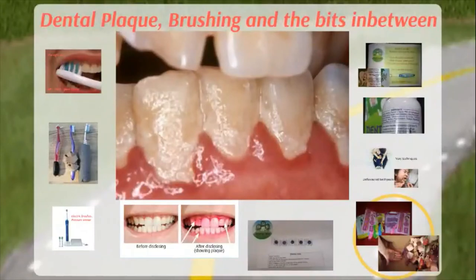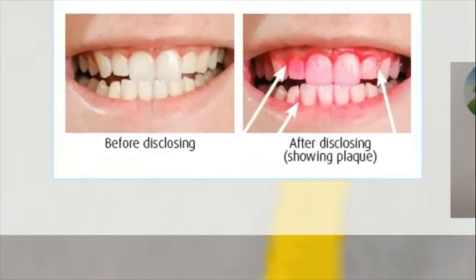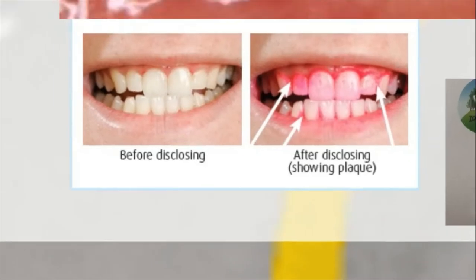One fun activity to do with children is plaque disclosing. These are little tablets available from the pharmacy — they're not swallowed, just chewed up as a food dye and swished around the mouth, with full instructions on the packet. The dye sticks to any plaque in the mouth. Do it after brushing, disclose the mouth, look in the mirror — the child and caregiver can do it together — see the pink areas on the teeth, then brush a second time to remove the remaining plaque.